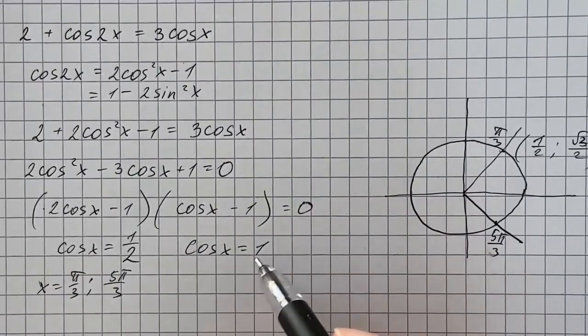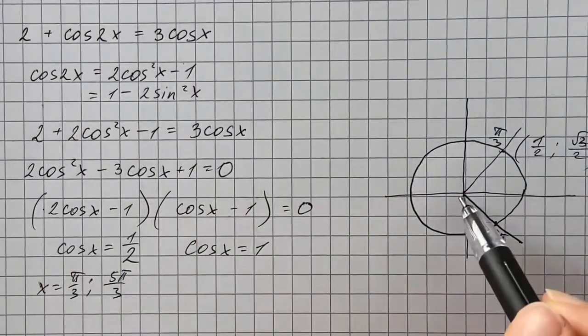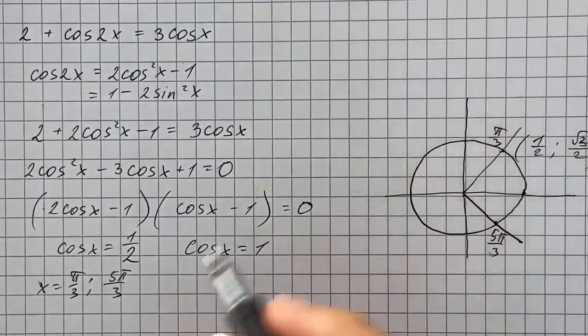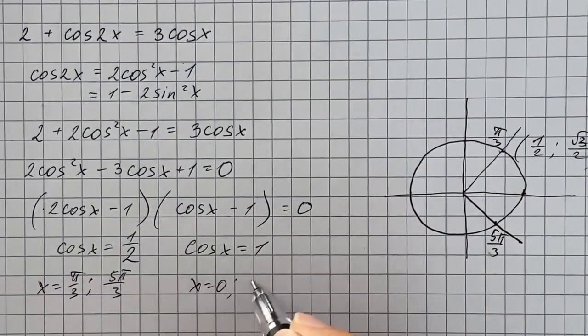And cosine of x equals 1 when x equals 0 or 2 pi. So that's going to be our four answers.